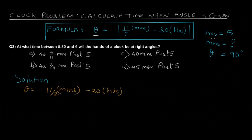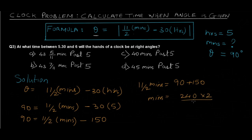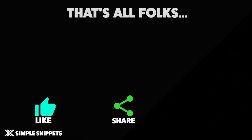Substituting into the formula: 90 = 11/2 × minutes − 30 × 5, so 90 = 11/2 × minutes − 150. Therefore 11/2 × minutes = 90 + 150 = 240, and minutes = 240 × 2 / 11. Solving gives 43 7/11 as the final answer, so the answer is 43 7/11 minutes past 5, which is option B.